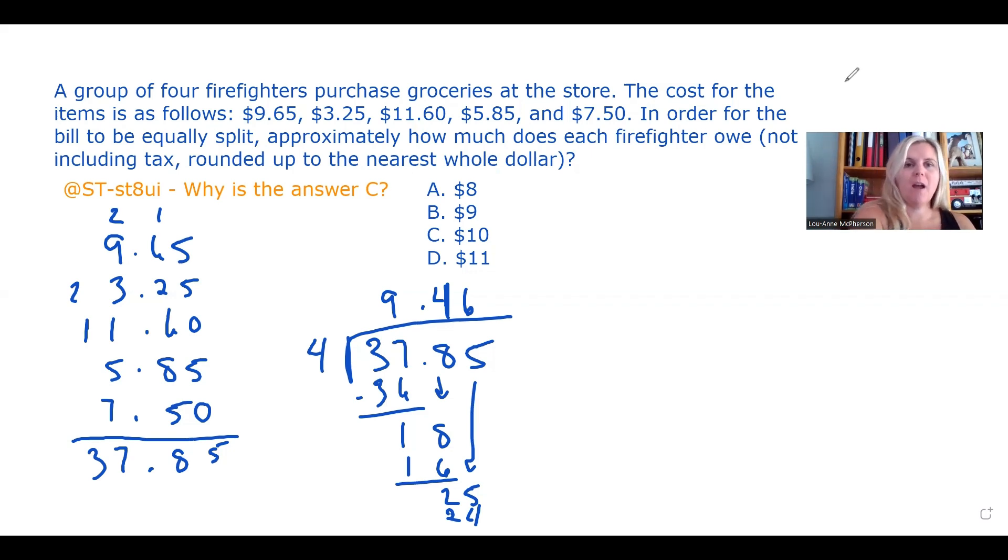We know we're dividing because it says equally split in the word problem. Whenever you see equally split, you're going to be dividing. And in this case, we're dividing by four because they want to know how much does each firefighter owe. Well, we have four firefighters.